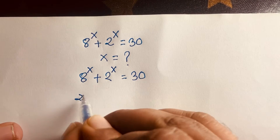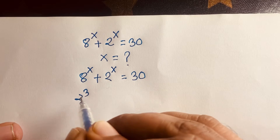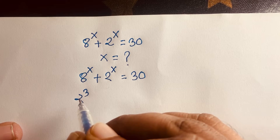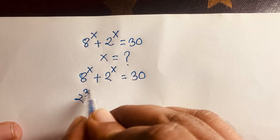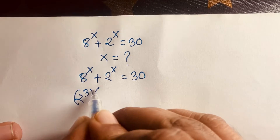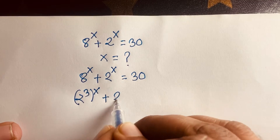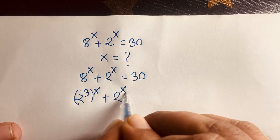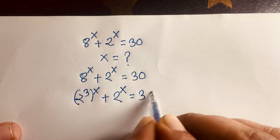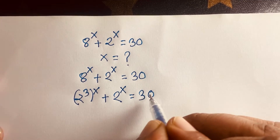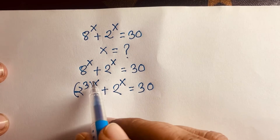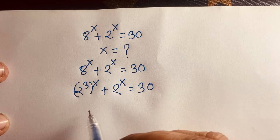We can write 8 as 2 to the power 3, because 2 times 2 times 2 equals 8. So the expression becomes 2 to the power 3, whole to the power x, plus 2 to the power x, is equal to 30.